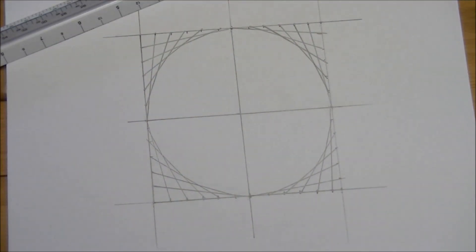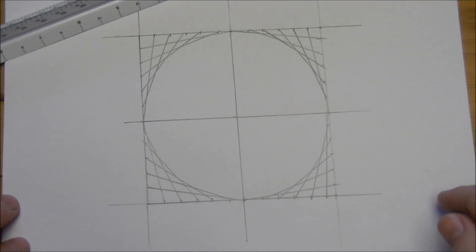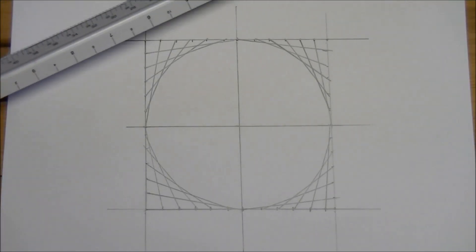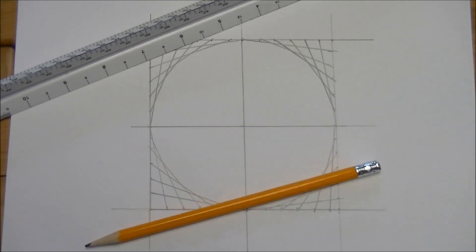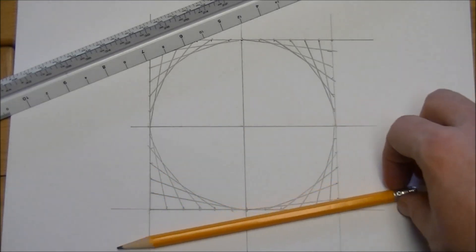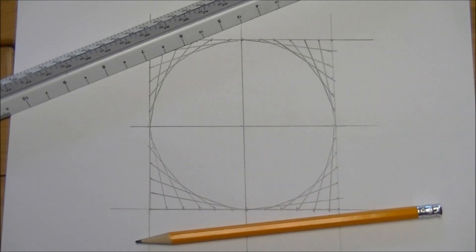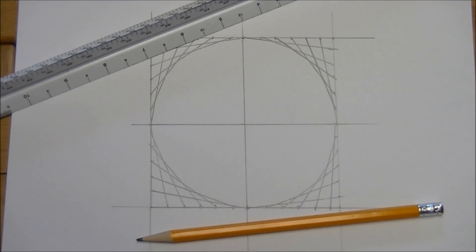And there you go. By connecting those dots along the outside of there, using just a straight edge and a pencil, we have created sort of like a circle. It's kind of a neat thing.